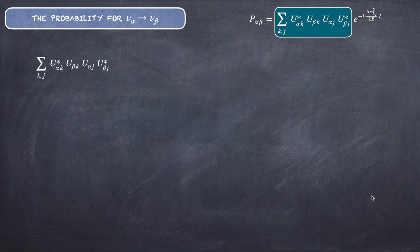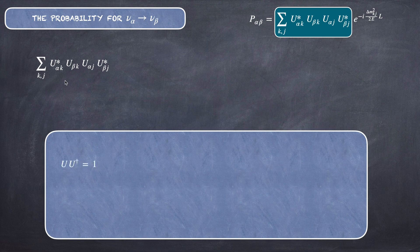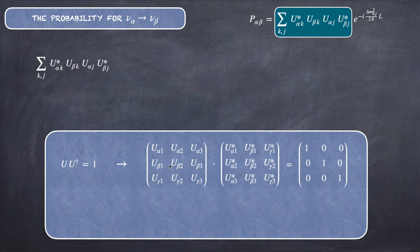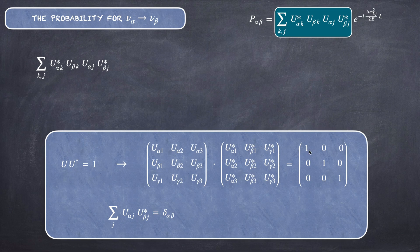Now let's consider properties of the unitary matrix U. Since U U† equals the identity, writing the matrices explicitly, the summation over J of U_αJ U*_βJ equals δ_αβ — zero when α ≠ β, and one when α = β.